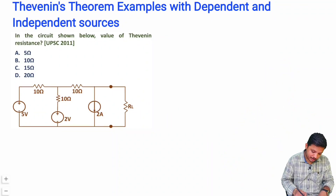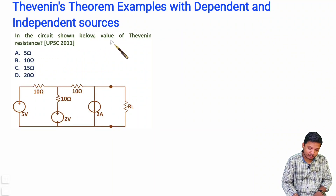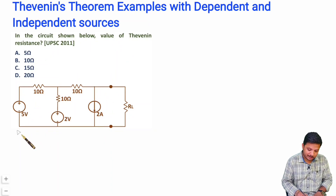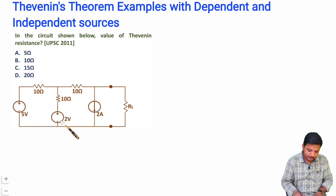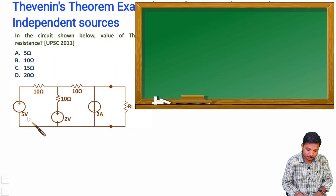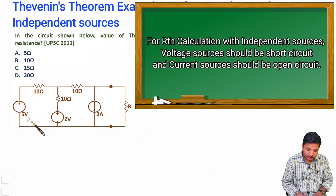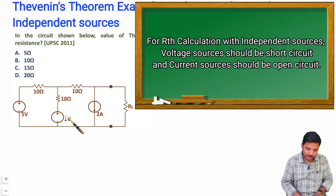In the first question, we need to find the Thevenin's resistance for the given circuit. If you observe all the sources — 2 ampere, 2 voltage, 5 voltage — those are all independent sources. For Thevenin's resistance calculation, we just need to short the voltage sources and open-circuit the current sources, then find the equivalent resistance of that network.